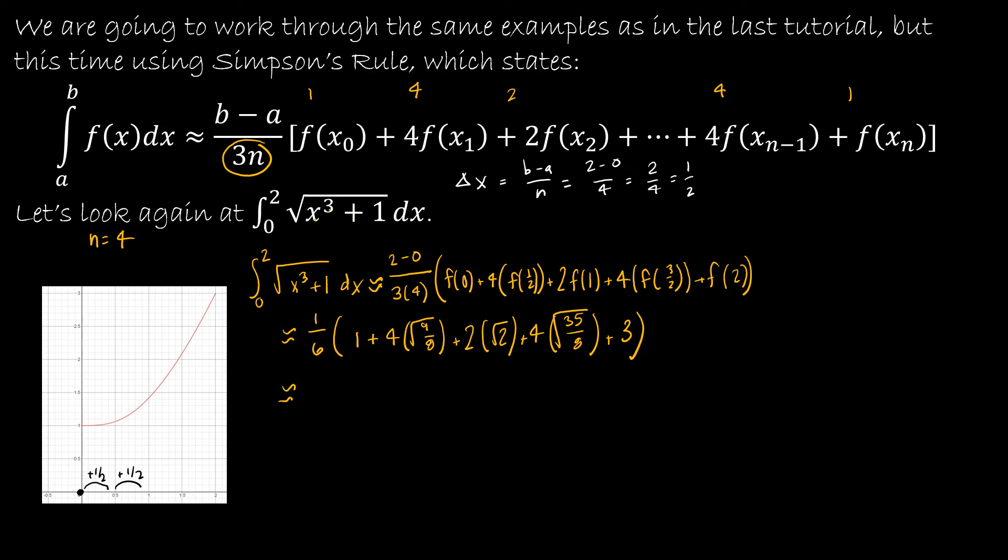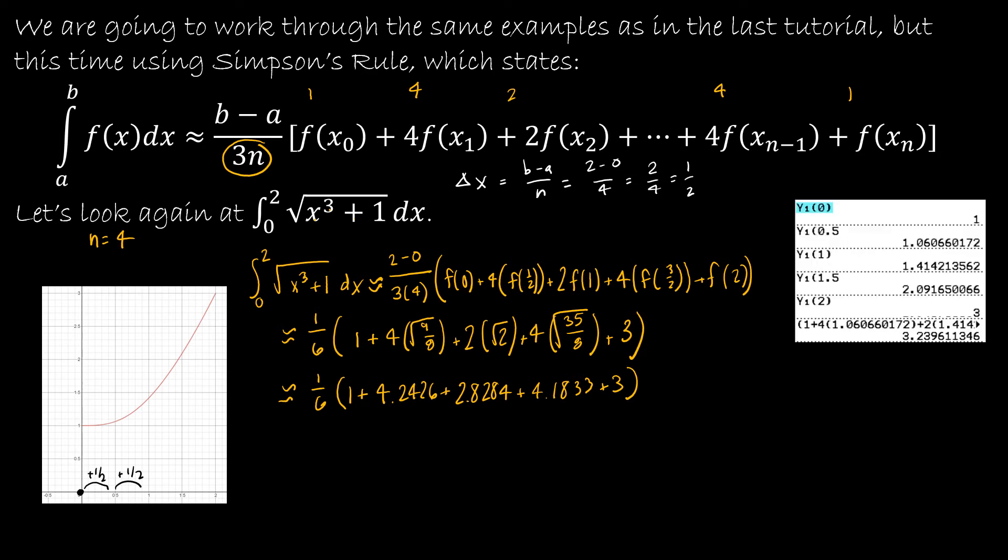From here, I probably wouldn't show a lot more work. I could go ahead and find those decimal approximations. The square root of 9 eighths times 4 is 4.2426. 2 times radical 2 is 2.8284. 4 times radical 35 eighths is 4.1833 and then plus 3. I can always use my calculator to help me. If I find my solution by summing all of those up and dividing by 6, I get 3.2396.